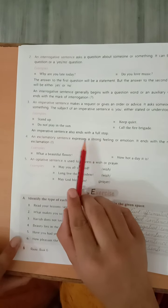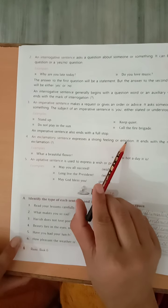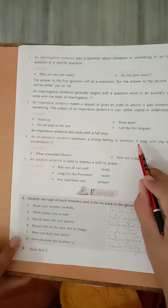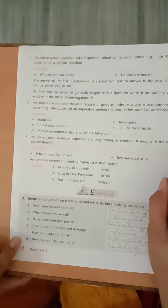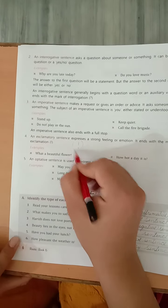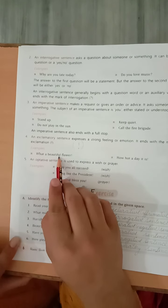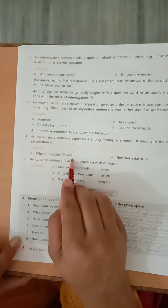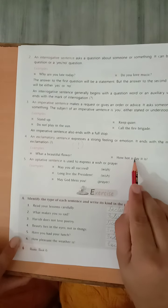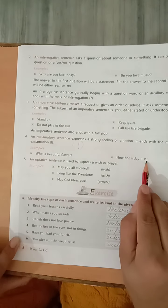An exclamatory sentence expresses a strong feeling or emotion. Ismein aap apni feelings ko vyakt kar sakti ho, emotions bata sakti ho. It ends with the mark of exclamation sign. Ye sabko pata hai, ye exclamation sign hota hai. For example, what a beautiful flower. Toh exclamation sign used ho raha. How hot a day it is.